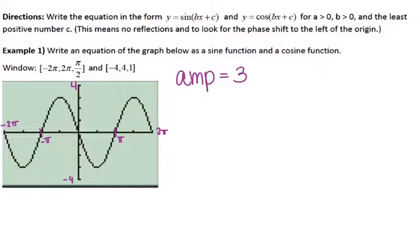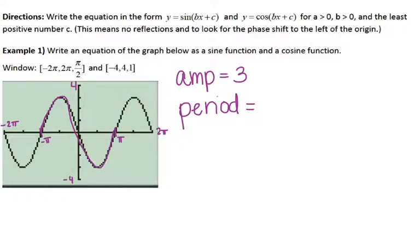The next thing to find is the period, which represents one full cycle — a cycle that repeats. A cycle of sine starts on the x-axis, goes up, comes back down, and lands back at 0. So the distance from negative π to positive π represents one full cycle of sine, giving us a period of 2π.